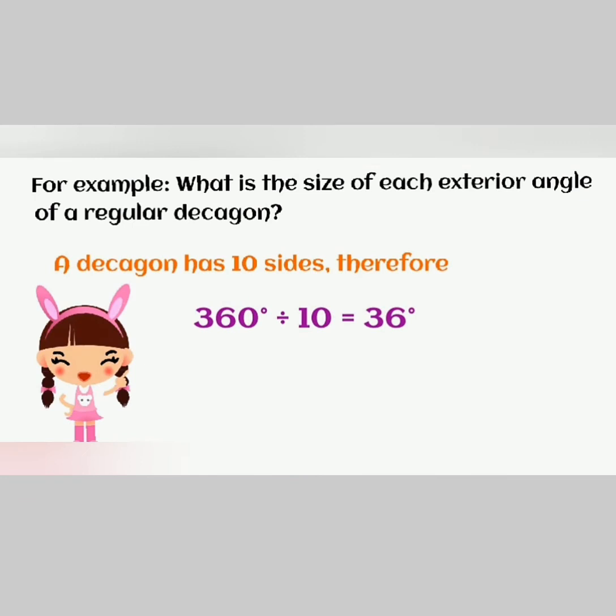For example, what is the size of each exterior angle of a regular decagon? A decagon has 10 sides. Therefore, 360 degrees divided by 10 would give us 36 degrees, which should be the size of each exterior angle of a regular decagon.